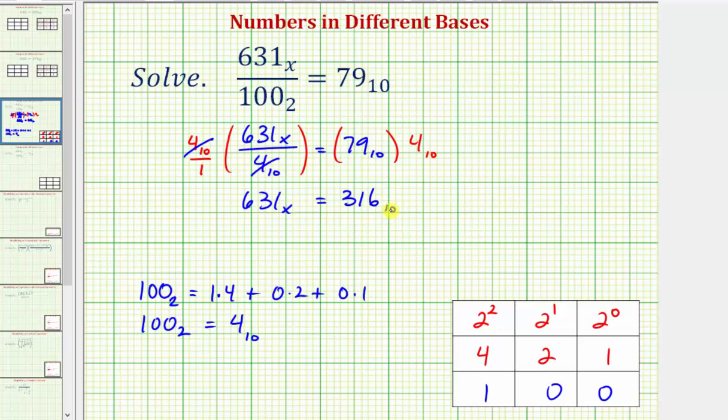So notice how to solve for x here, we want to determine what base 631 would have to be in to be equal to 316 base 10. Let's first determine if x, the base of 631 would have to be larger or smaller than 10. We'll notice how we have 316 in base 10.